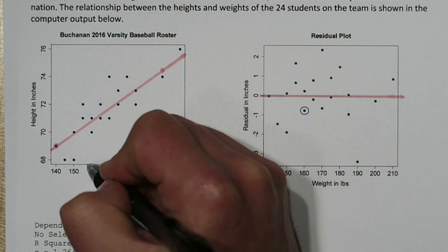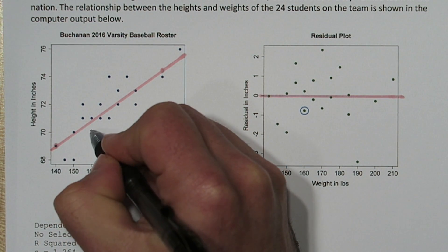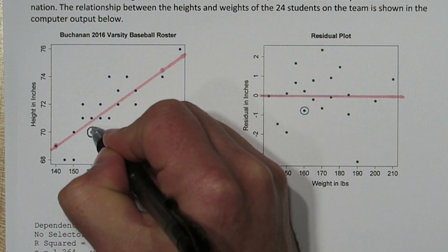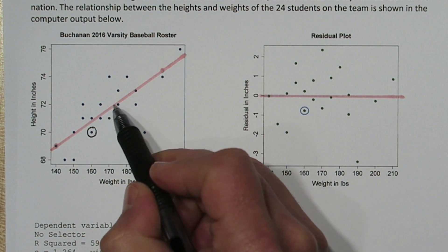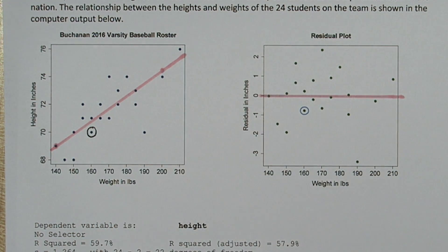So if we go to the original scatterplot to 160 pounds, we see this player who is actually shorter than our model would predict they were. And they're shorter by almost an inch. So this is the corresponding value.